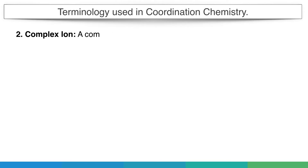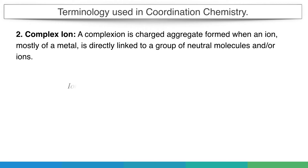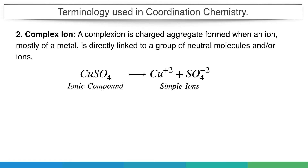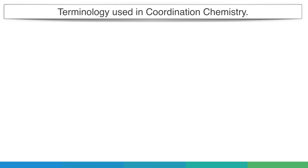Second is the complex ion. A complex ion is a charged aggregate formed when an ion, mostly of a metal, is directly linked to a group of neutral molecules or ions. For example, when ionic compound copper sulfate dissociates, it forms Cu²⁺ and SO₄²⁻ ions — these are simple ions. But when a coordination compound dissociates, the coordination bond between the central metal atom copper and 4 ammonia ligands remains intact. This type of ion formed is called a complex ion. The charge on a complex ion can be positive or negative depending upon the compound.